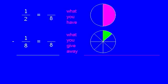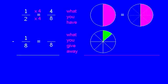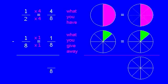Next, we have to convert the pieces to that common size. So going from a whole of two pieces to a whole of eight pieces, each piece has to become four pieces. So four times one is four. And the bottom fraction is already in eighths.